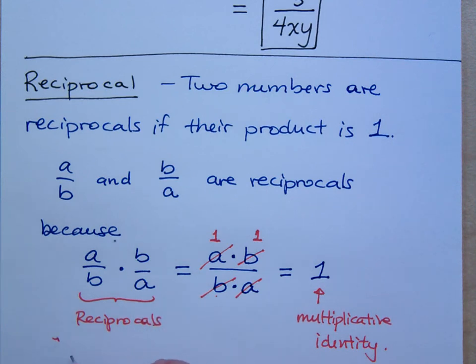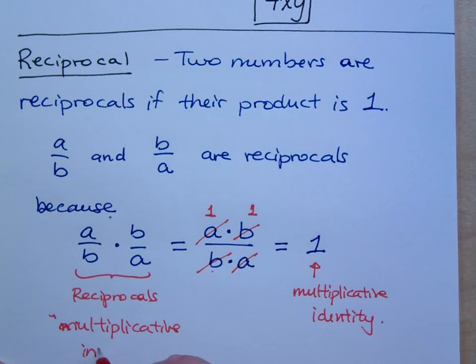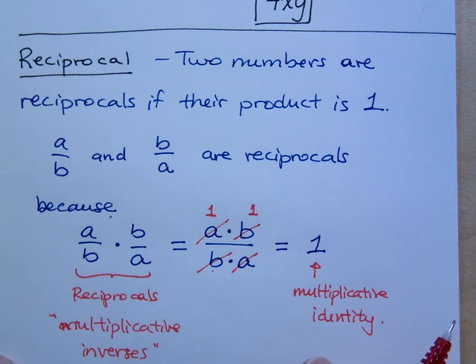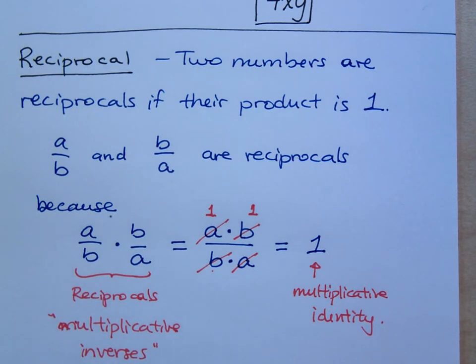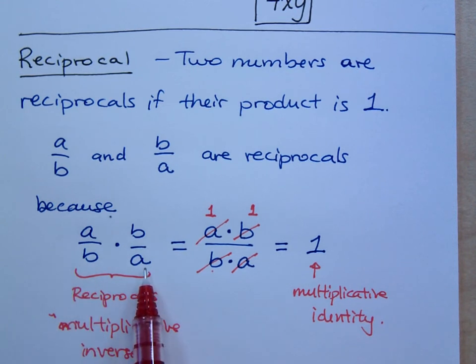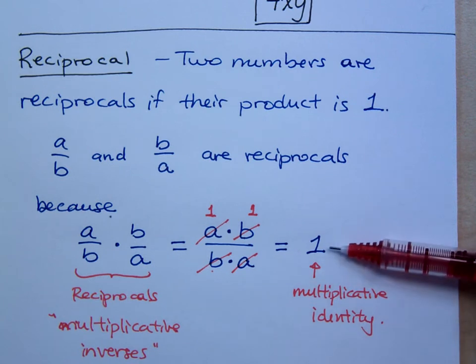Reciprocals are multiplicative inverses. When we talked about additive inverses, you guys call those guys opposites. And the additive identity was zero. What happens if you take a number and you add its opposite? Like five and negative five, and you add those, what do you get? You get zero, which was the additive identity. When you multiply a number times its reciprocal, these are multiplicative inverses, and you get the multiplicative identity, which is one.